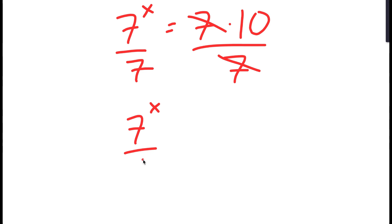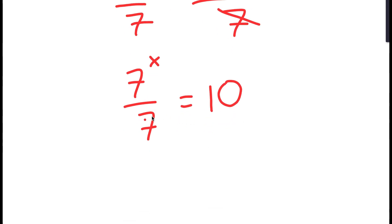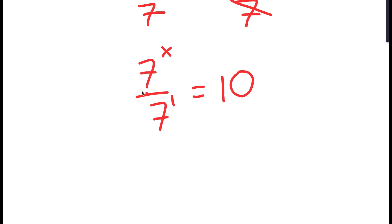So now I have 7 to the power of x over 7 is equal to 10. And 7, I'm going to rewrite as 7 to the power of 1. Now, if I have something in the form a to the power of m over a to the power of n, this is equal to a to the power of m minus n. So 7 to the power of x over 7 to the power of 1 is equal to 7 to the power of x minus 1, and this is equal to 10.